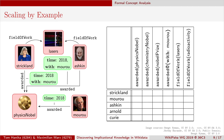Let's look at an example. We have here Donna Strickland, Arthur Ashkin — one of the people who won the Nobel Prize in Physics with her — and also Gérard Mourou, the third winner. They all got the Nobel Prize in Physics last year. These two have a qualifier 'with Gérard Mourou.' We put all these entities as rows in the table, so we have Strickland, Mourou, Ashkin, Arnold, and Curie.